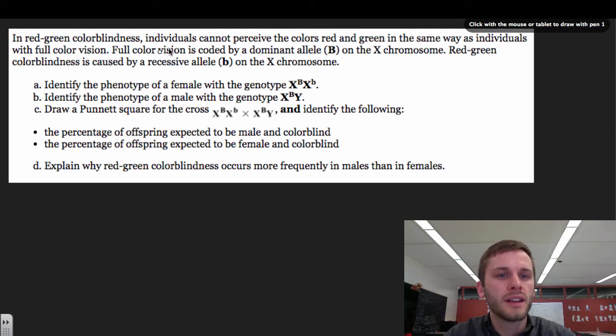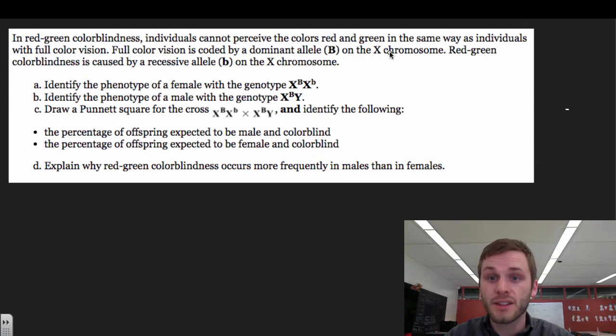In red-green colorblindness, individuals cannot perceive the colors red and green in the same way as individuals with full color vision. Full color vision is coded by the dominant allele, big B, on the X chromosome. Red-green colorblindness is caused by a recessive allele, little b, on the X chromosome.